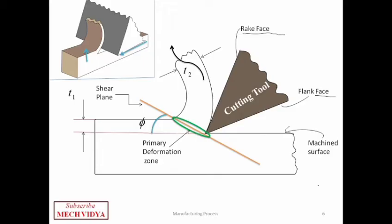The angle made by this shear plane with the machined surface is known as the shear angle, denoted by phi. There is another zone where a second stage of deformation takes place. This is called the secondary deformation zone.